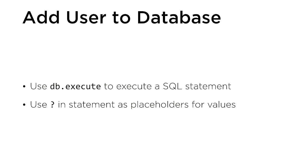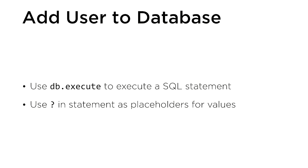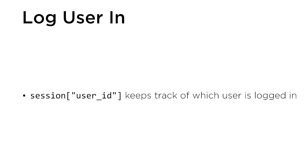Once you've generated a hash of the password, you can add all of this information into the database by using db.execute to run an INSERT statement to add a new row into the users table. Remember you can use the question mark symbol as a placeholder for values you don't know at the time of writing the code. Once the user has been added to the users table, you can log the user in by setting session['user_id'] equal to the new user's ID.